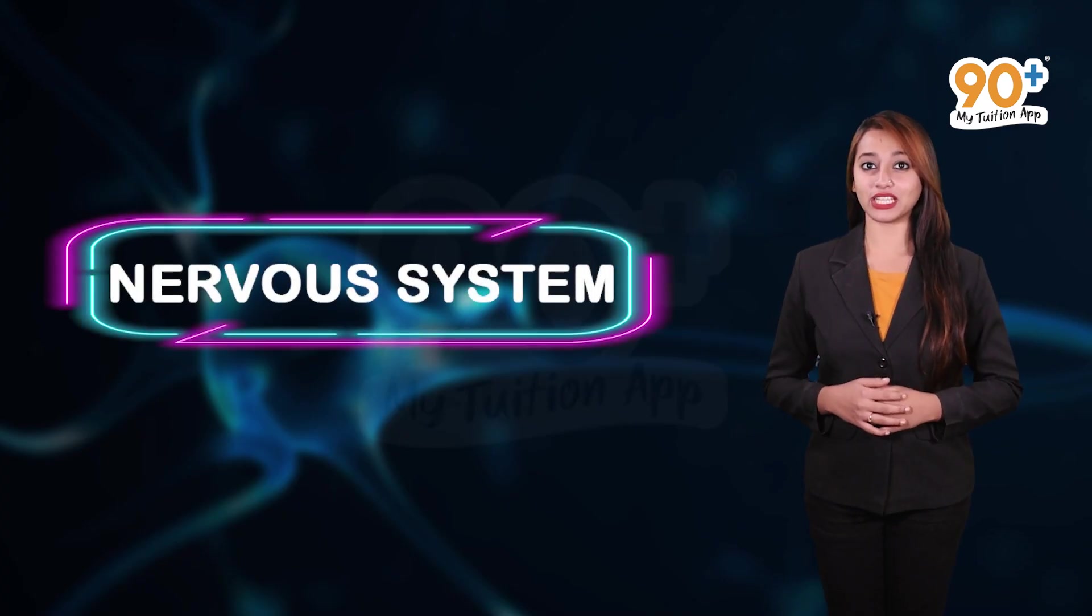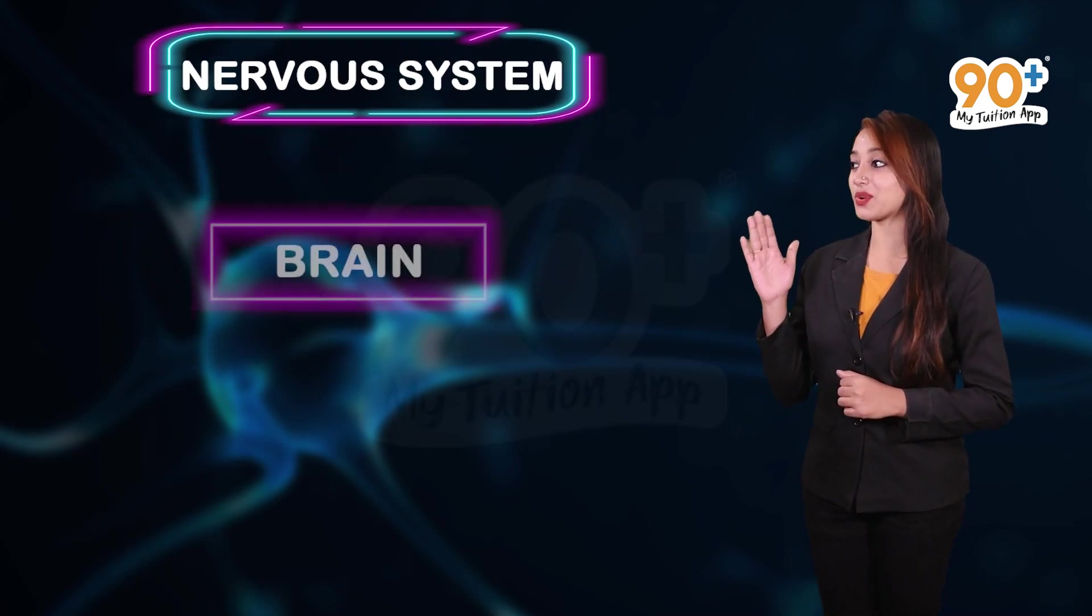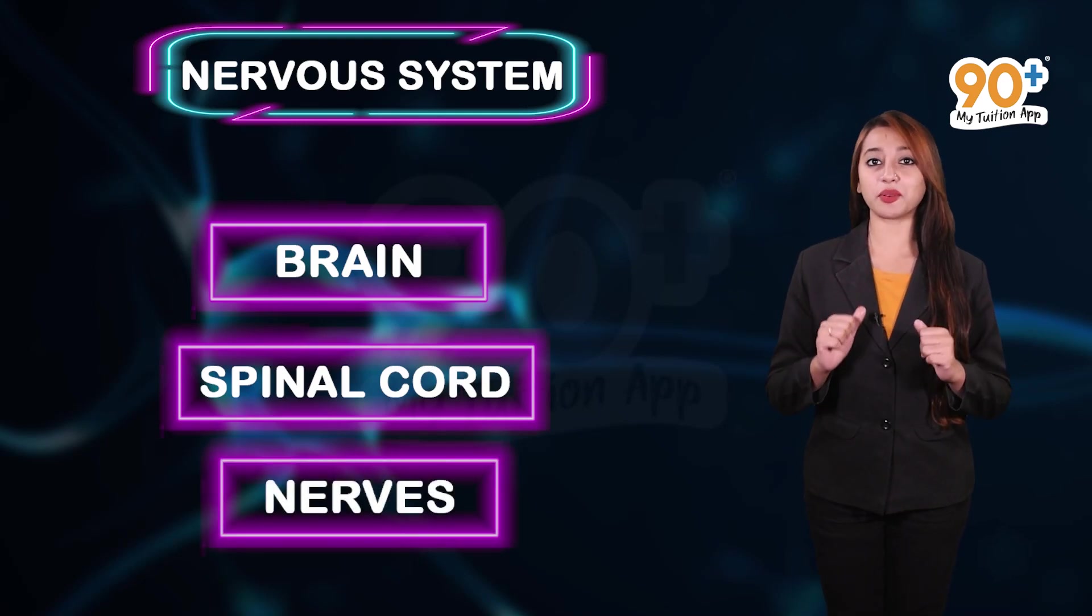Now, let us know about the nervous system. The nervous system comprises of the brain, the spinal cord and networks of nerves which are spread throughout our body.